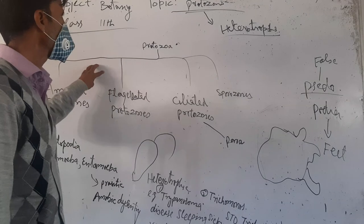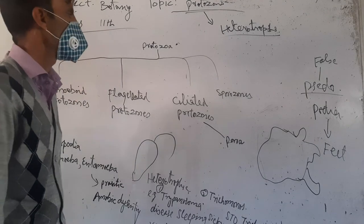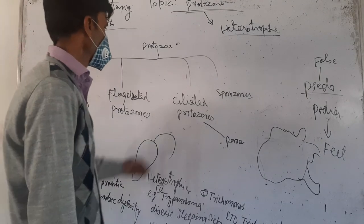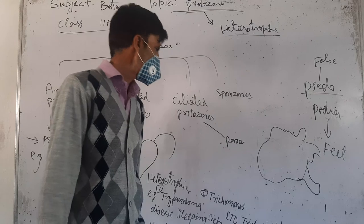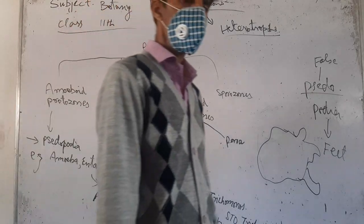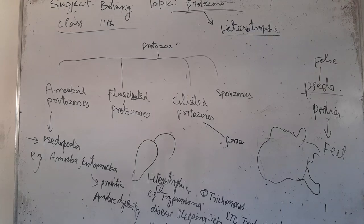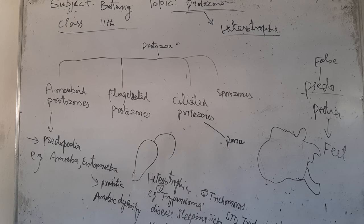This was about amoeboid protozoans and flagellated protozoans. Next are ciliated protozoans, whose characteristic is reproduction by fission. That is all for today. Thank you.